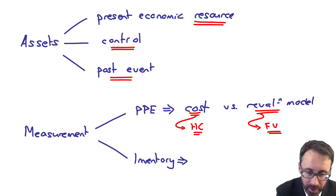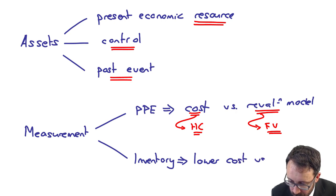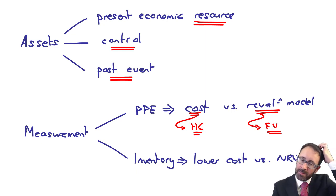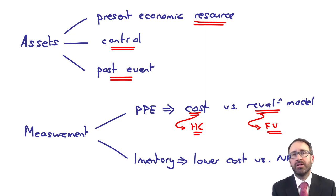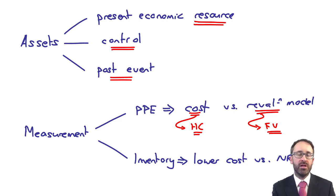For inventory, we measure it at the lower of cost versus NRV. You have the same historic cost, and then net realisable value — that's looking at an exit price when you sell it. Thinking about fair value, inventory-specific fair value is measured under IAS 2, not under IFRS 13, which we'll touch upon at a later date.